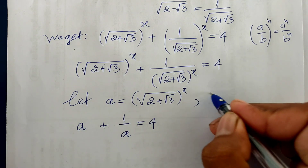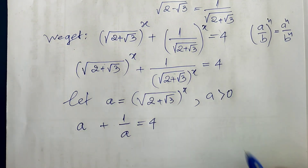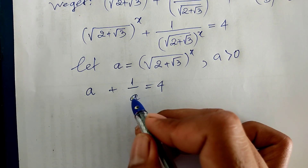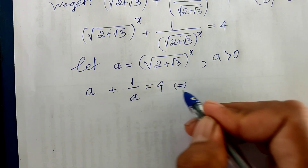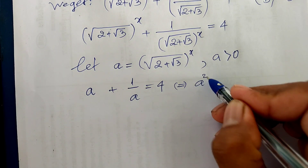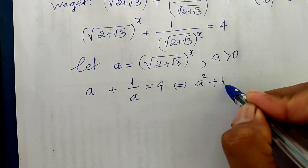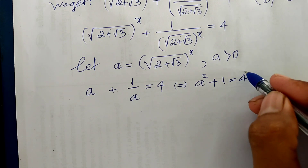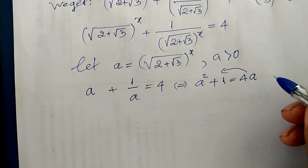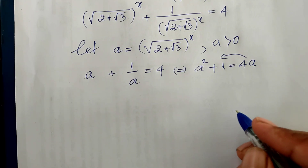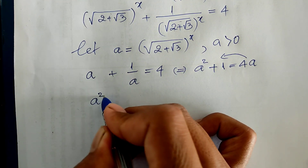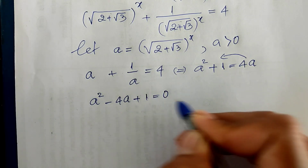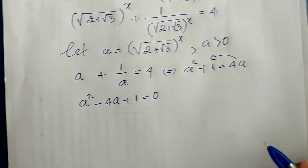Also, we know A is positive. Now I multiply both sides of this equation by A. So I get A squared plus 1 equals 4A. Now I move 4A from the right-hand side to the left-hand side. So I get A squared minus 4A plus 1 equals 0.